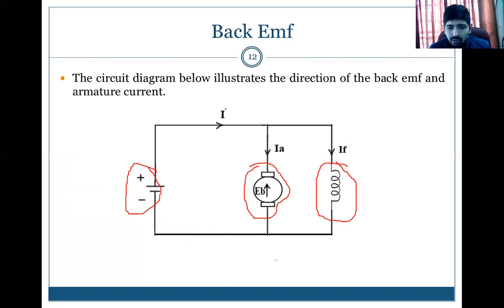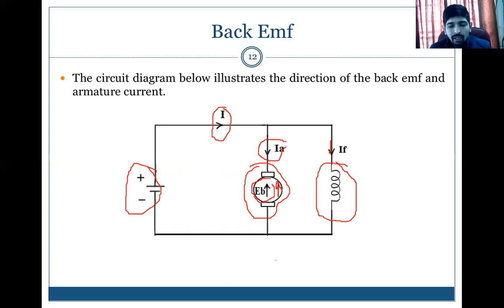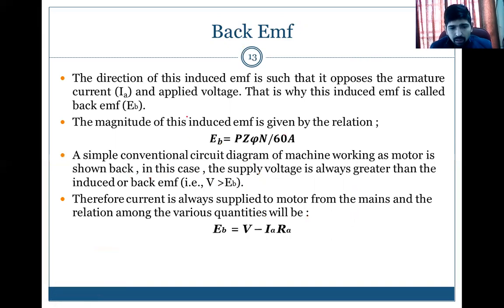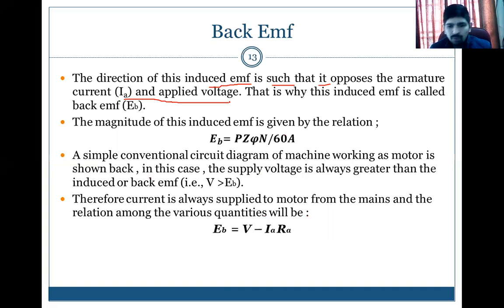DC supply is given to both — the field winding acts like a magnet producing flux. The total line current divides into armature current (IA) and field current. When armature current IA passes through the armature, an EMF is generated — that is back EMF (EB) — and its direction is upward, that is opposite to IA. The direction of this induced EMF opposes the armature current and the applied voltage. That is why this induced EMF is called back EMF.